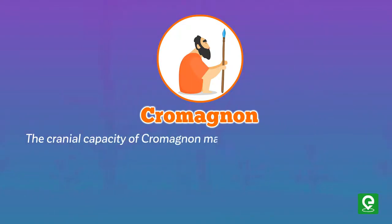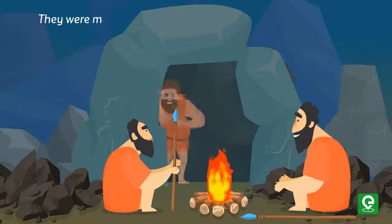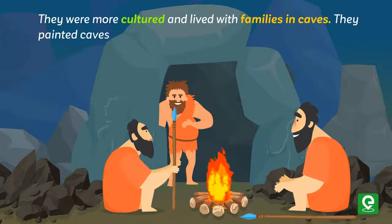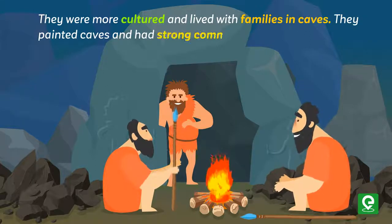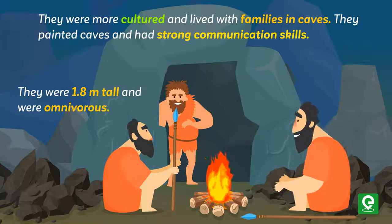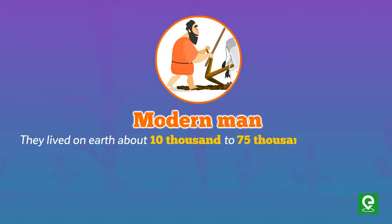Cro-Magnon man had a cranial capacity of 1600 to 1650 CC. They are called the recent ancestors of today's modern man. They were more cultured, lived with families in caves, painted caves, and had strong communication skills. They were 1.8 meters tall and were omnivorous.